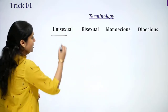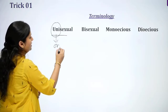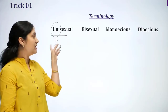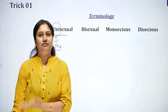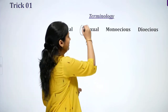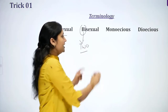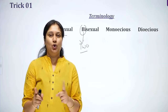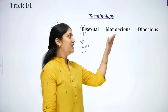Let's understand. Uni means one — such an organism in which one sex is present, either male or female. Bisexual: bi means two — an organism in which two sexes are present, both male and female parts are in one organism.